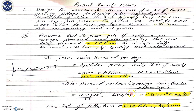This has to be converted into an hourly demand because the rate of filtration is given in liters per hour. So this demand is divided by 24, which gives approximately 675 × 10³ liters per hour. The filtration rate has already been given as 5,000 liters per hour per square meter.